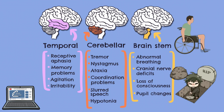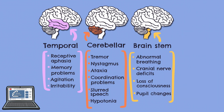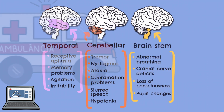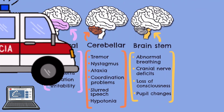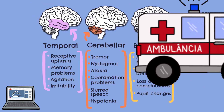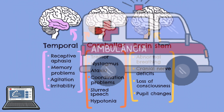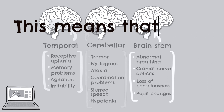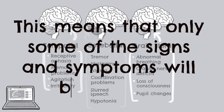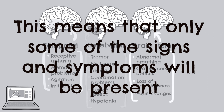Before we finish, it's important to point out that the examples we have run through display the symptoms elicited by more severe examples of brain injury, for instance by a large vessel occlusion or major trauma. It's important to remember that oftentimes the injury to a particular brain region may be more minor and that only fragments of syndromes are observed.